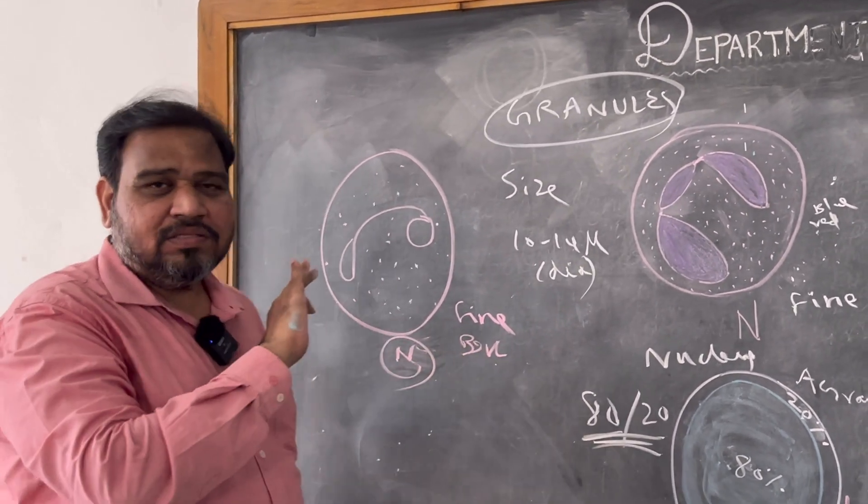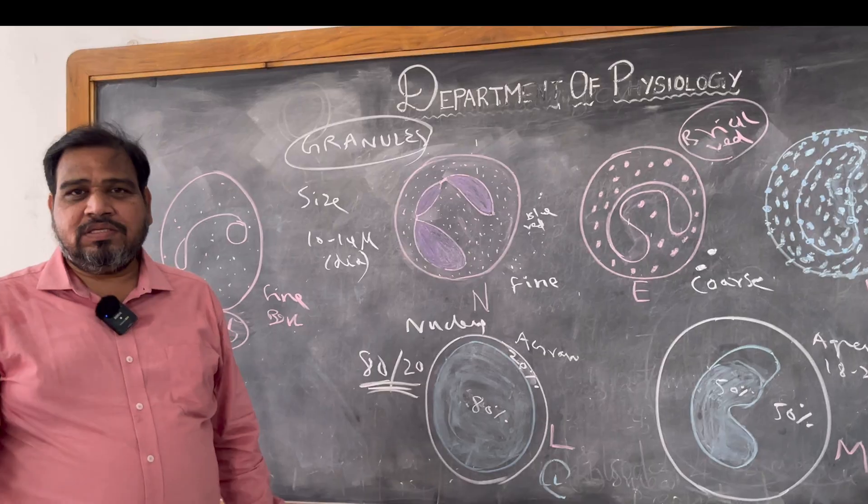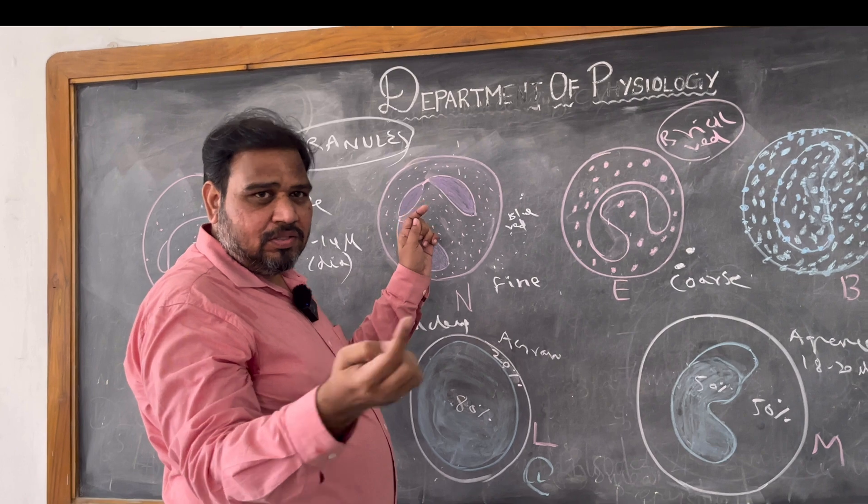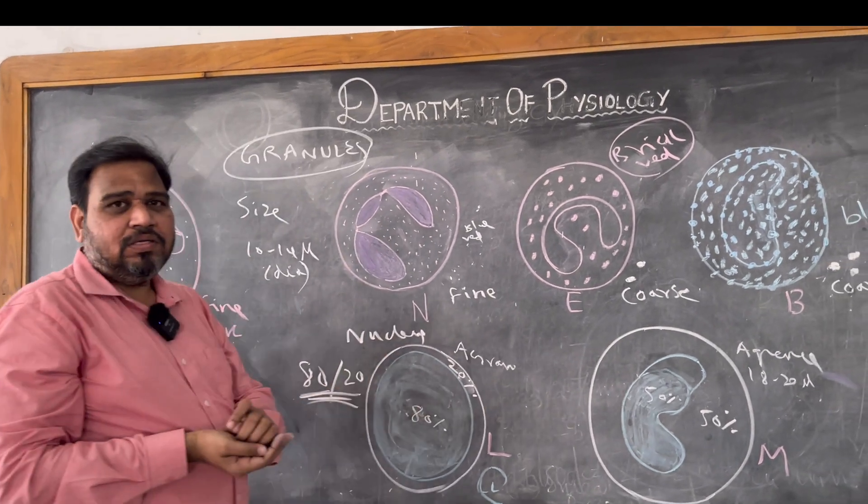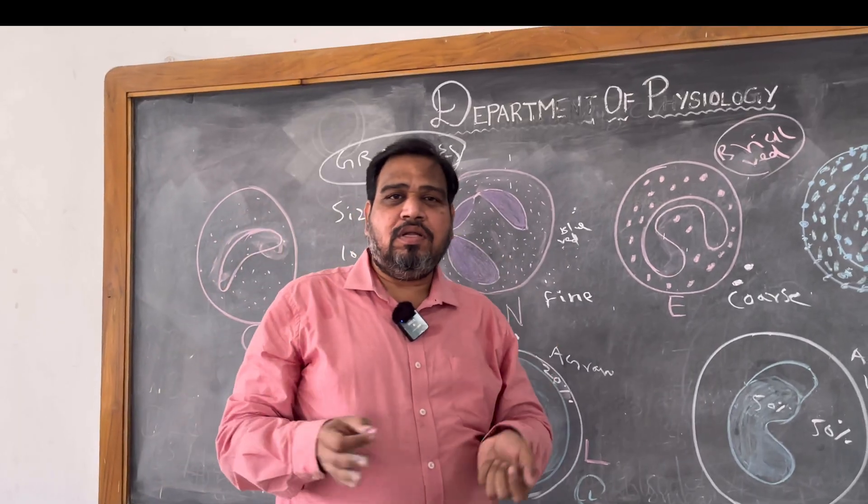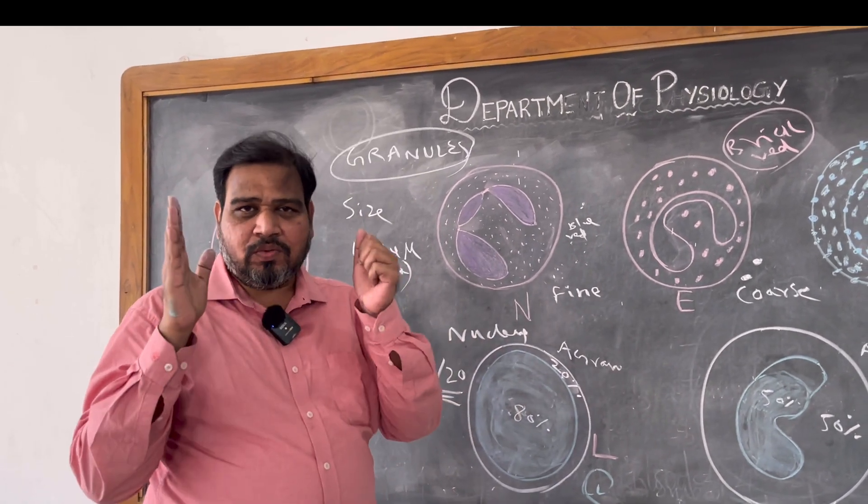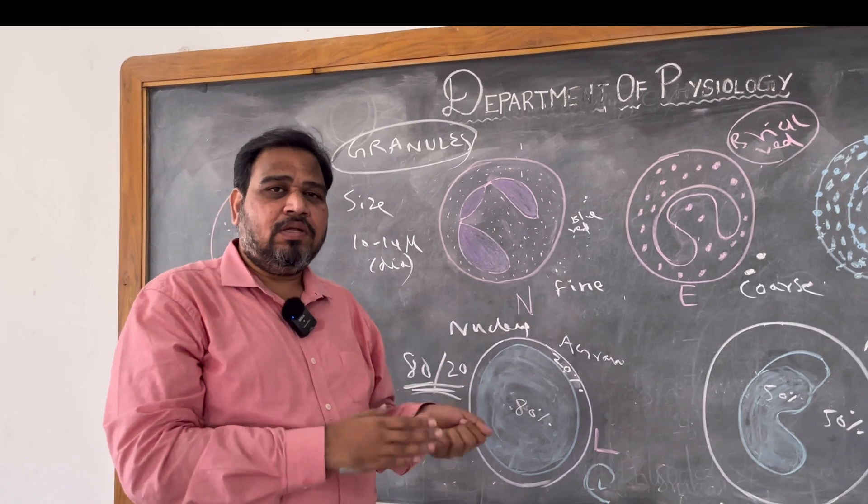So do not tell based upon the size, do not tell based upon the nucleus shape. It is based upon what? Color granules, thickness of the granules, and cytoplasm nucleus ratio. Based upon the granules only you have to differentiate the granulocyte. Based upon the 80-20, that cytoplasm nucleus ratio only, you have to tell whether it is lymphocyte or monocyte.